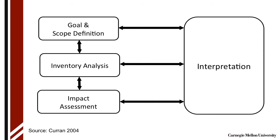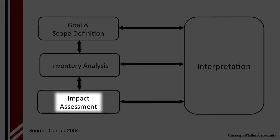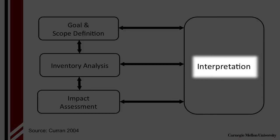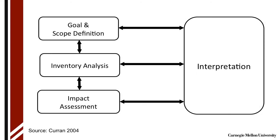And then the impact assessment is when we look at what are the impacts of those flows to the environment. Throughout this whole process of goal and scope definition, inventory analysis, and impact assessment, there's interpretation that the analyst or the user has to do. By interpreting what you're looking at when you're collecting all the data, you can go back and refine your goal and your scope or refine what inventory categories you're looking for. So there's always this feedback with the interpretation. Those are the main steps of a life cycle assessment.